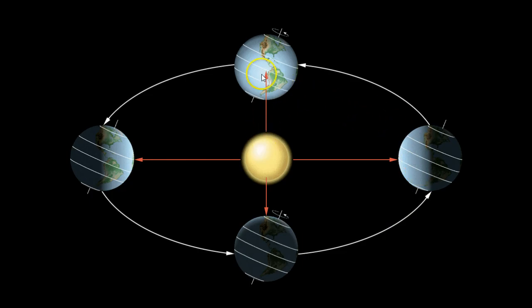We can see the demonstration of the spring equinox a little bit more closely. Here you see the direct rays of the sun hitting the equator at the equinox, and we can also see that it is getting the most direct sunlight at that greatest angle of insolation there.